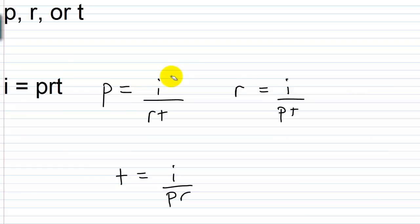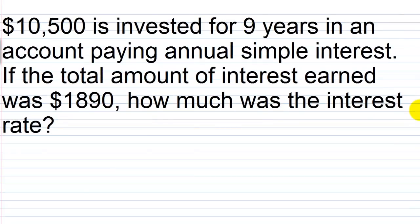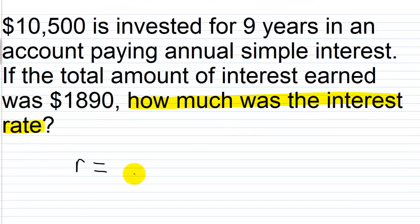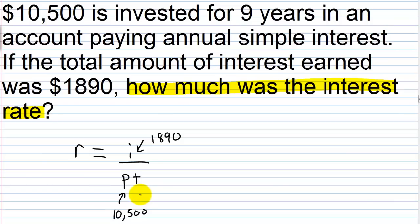Let's look at this problem: ten thousand five hundred dollars is invested for nine years in an account paying annual simple interest. If the total amount of interest earned was one thousand eight hundred ninety dollars, how much was the interest rate? The question asks for r, the interest rate. We found that r equals i over p times t. I is one thousand eight hundred ninety dollars, p is ten thousand five hundred, and t is nine.